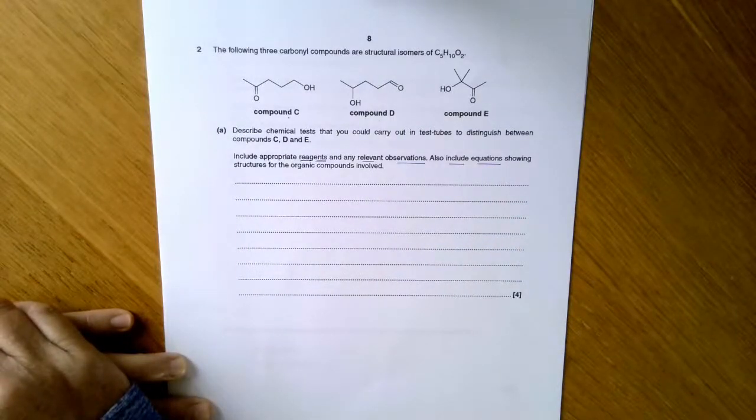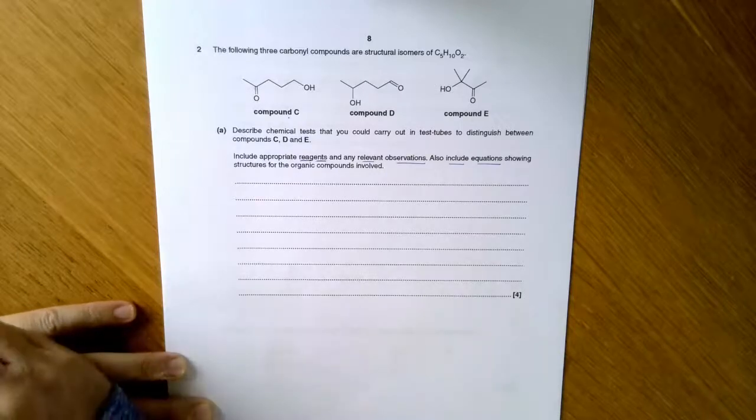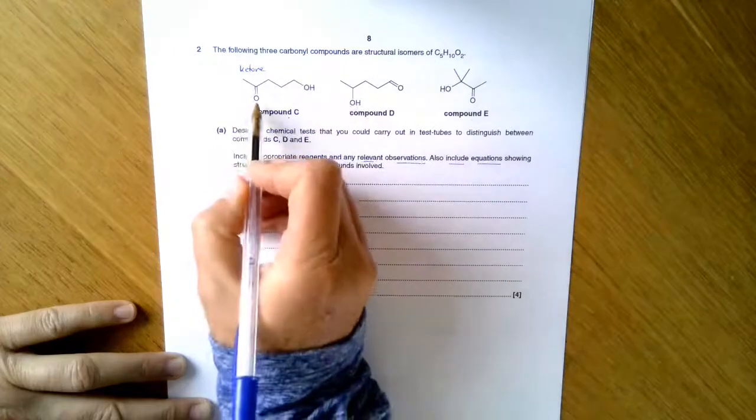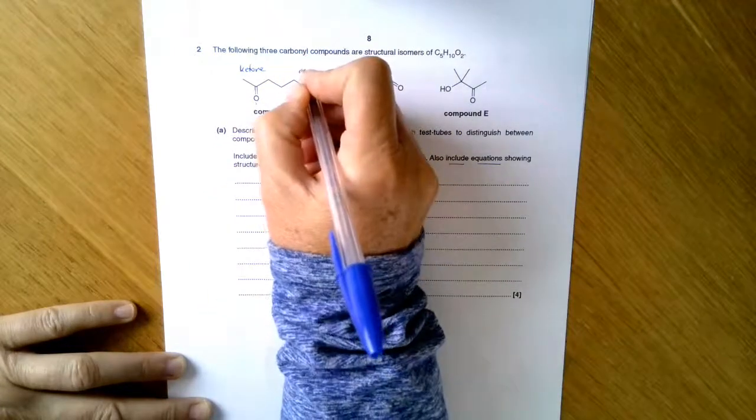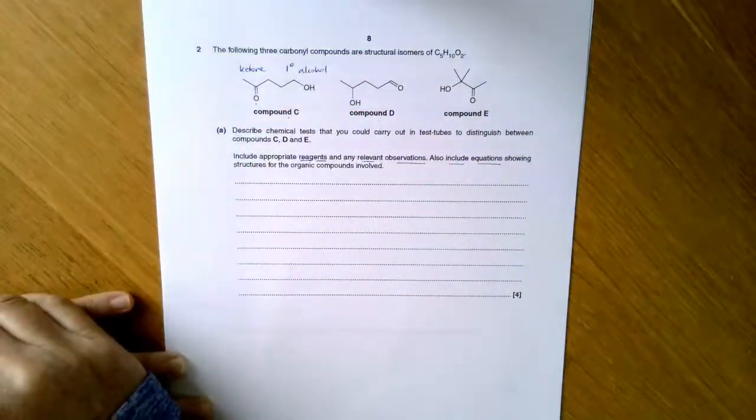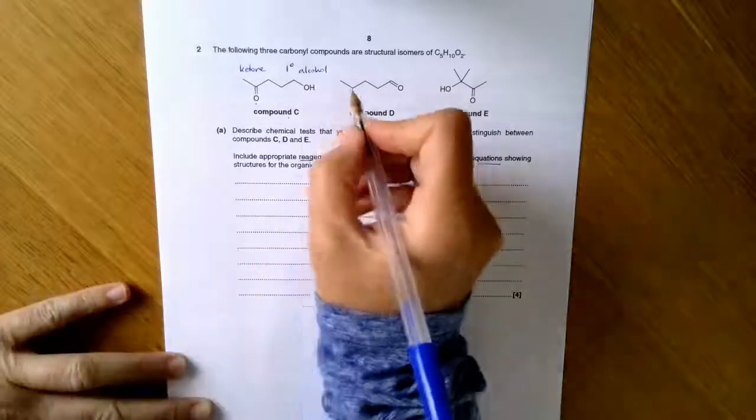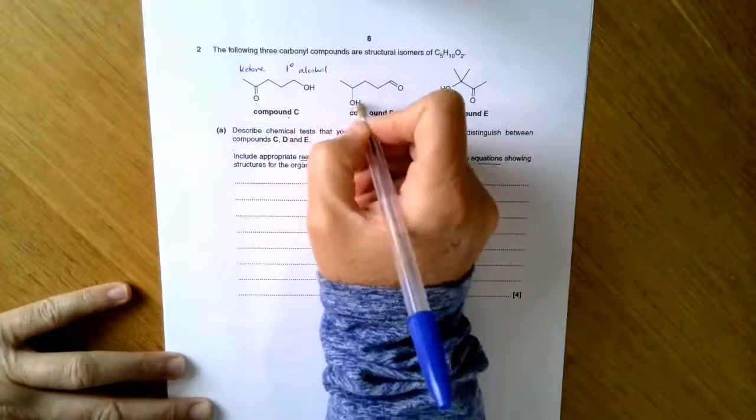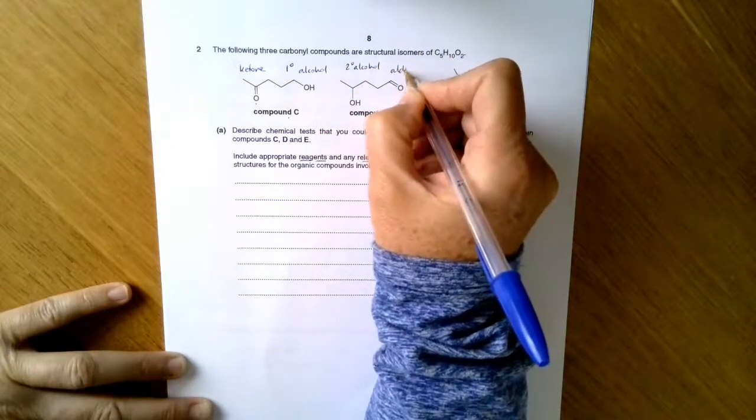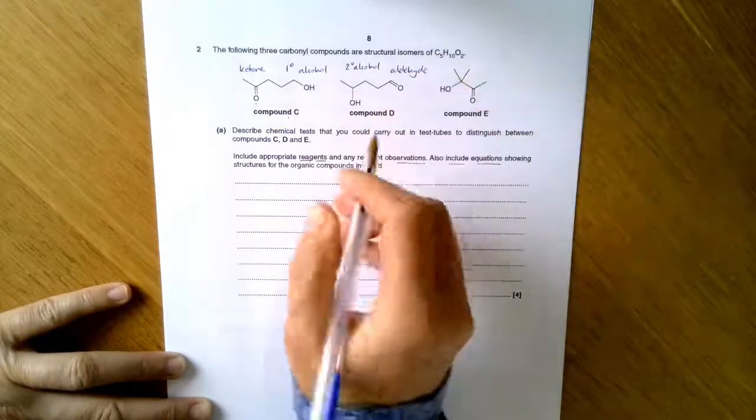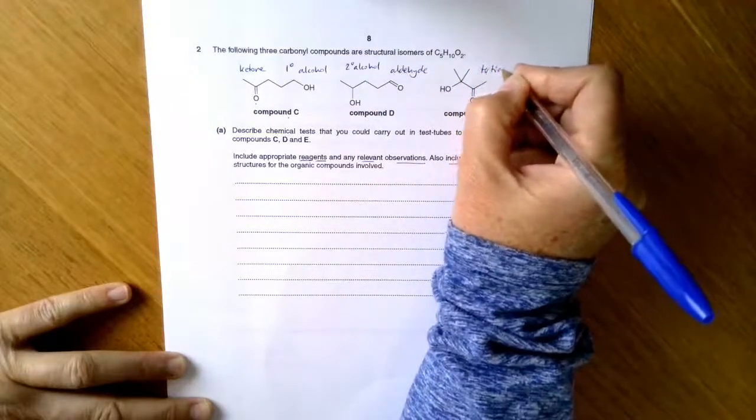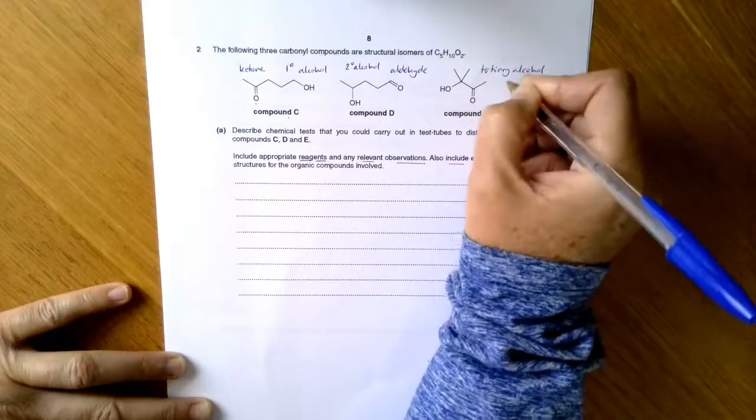If I was faced with this question I would just identify the functional groups in C, D, and E first. So C has got a ketone because it's got a C double O in the middle of the chain, and it's got an alcohol, and that's on the end of the chain so that's a primary alcohol and that's important that I identify that's primary. Compound D also an alcohol, but this one is a secondary alcohol and it's an aldehyde. It's got a C double O on the end. And then E is a tertiary alcohol and a ketone.